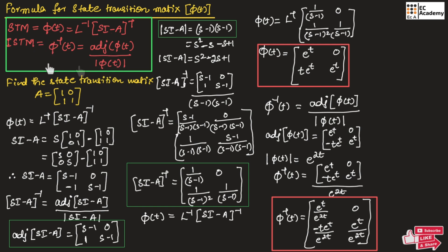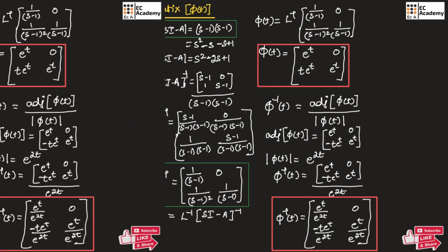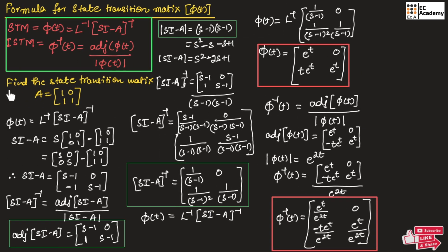Based on these formulas, questions will be asked. Let us take an example where we need to find the state transition matrix for A equal to [1, 0; 1, 1]. First, let us consider the formula for the state transition matrix. Using this formula, we first need to find (SI - A).